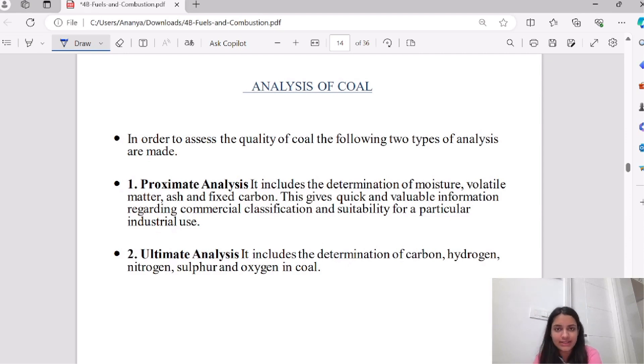Numerical questions come from which you have to take out percentages to assess the quality of coal. We analyze its quality. First, we have the proximate analysis. Proximate analysis includes the determination of moisture, volatile matter, ash, and fixed carbon. What is the amount of these four factors? How do we classify them for industrial use?